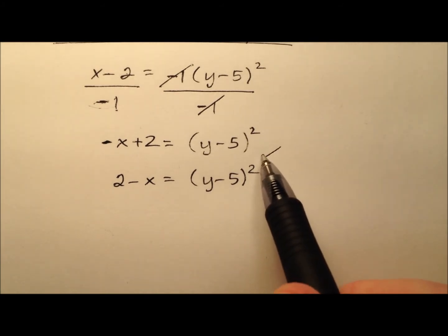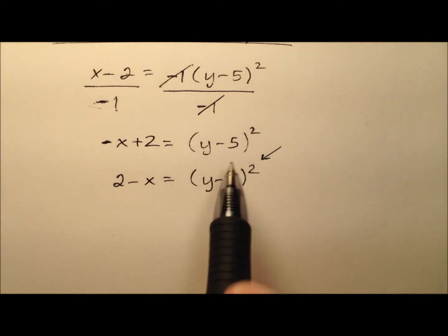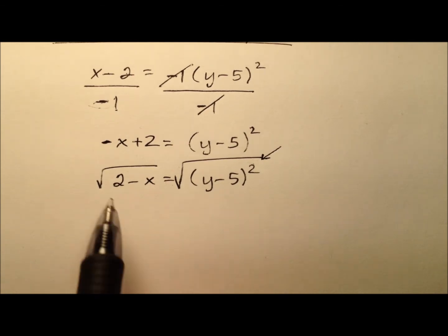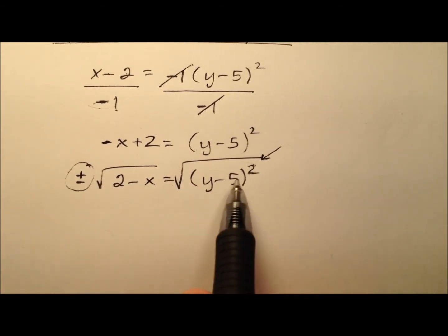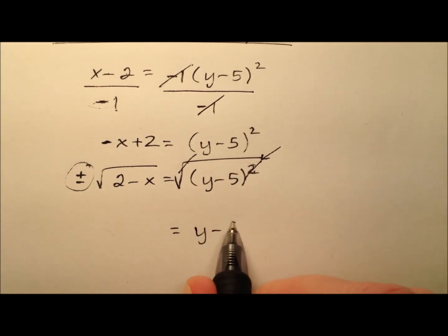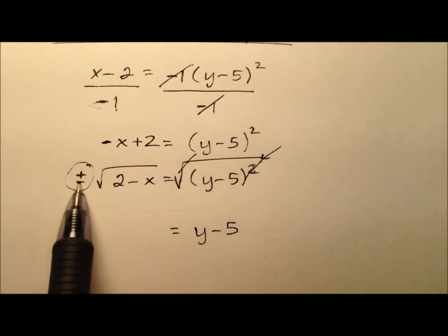So here is a very important step here. We have this squared quantity over here, and the inverse operation here would be to take the square root of both sides of the equation. And remember, algebraically speaking, when we do this, we need to include a plus or minus on this non-perfect square side. And so on the right side, the square and the square root cancel, so we have y minus 5. On the left side, we have this plus or minus the square root of 2 minus x.